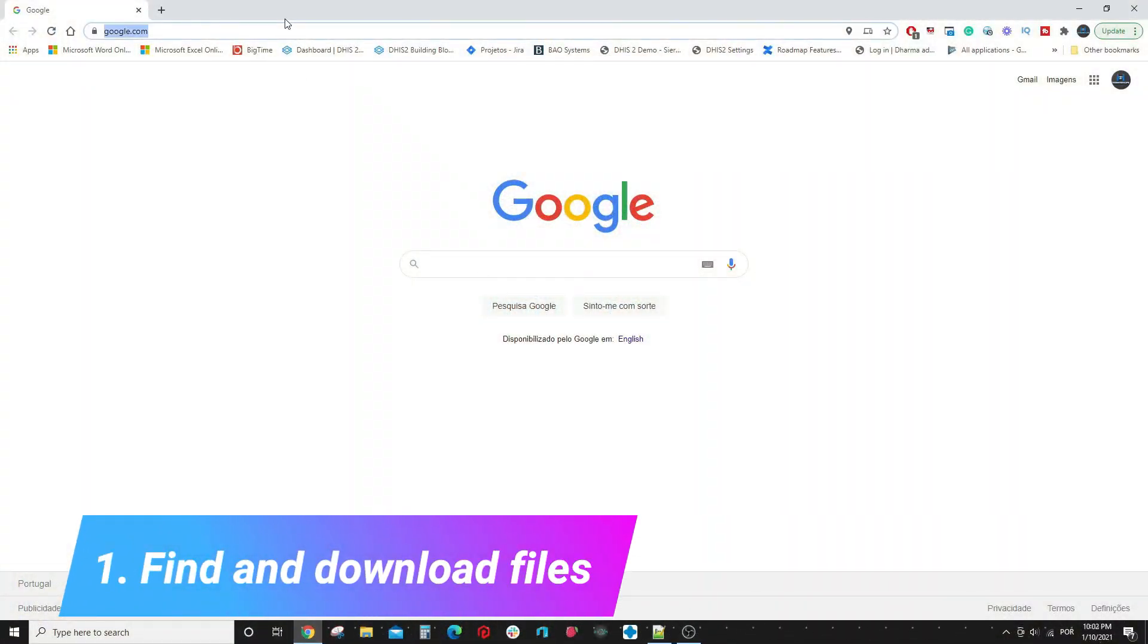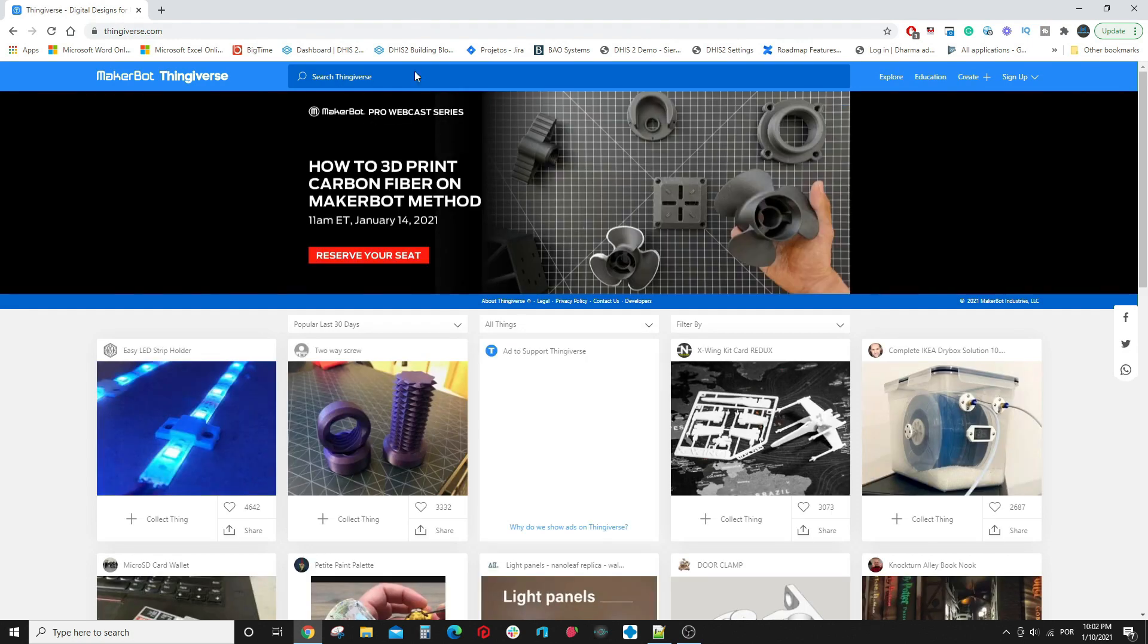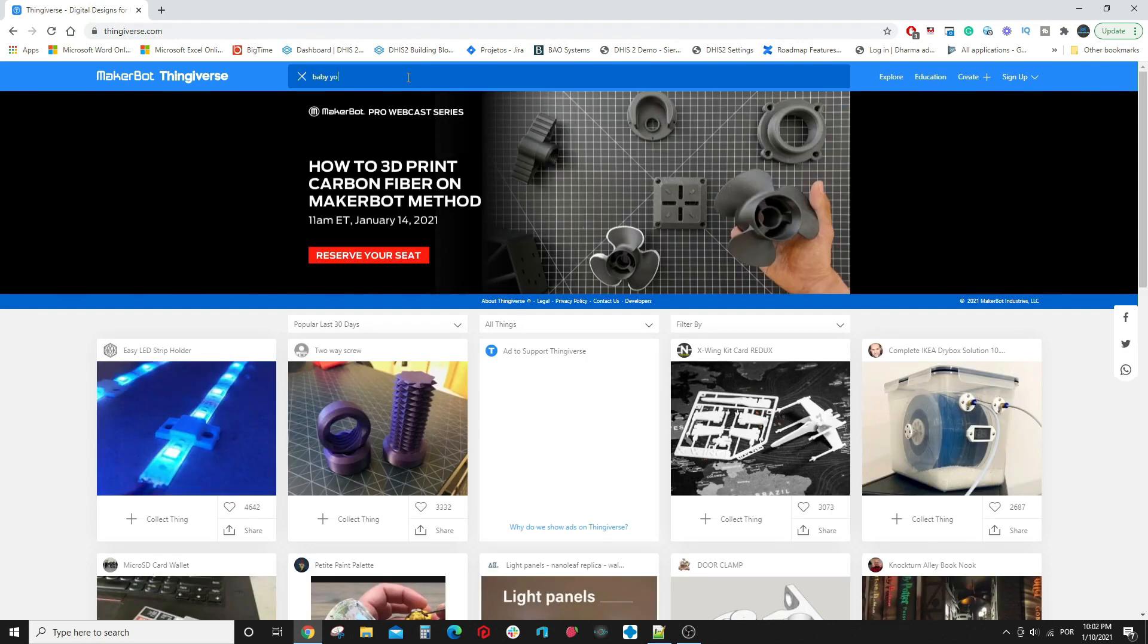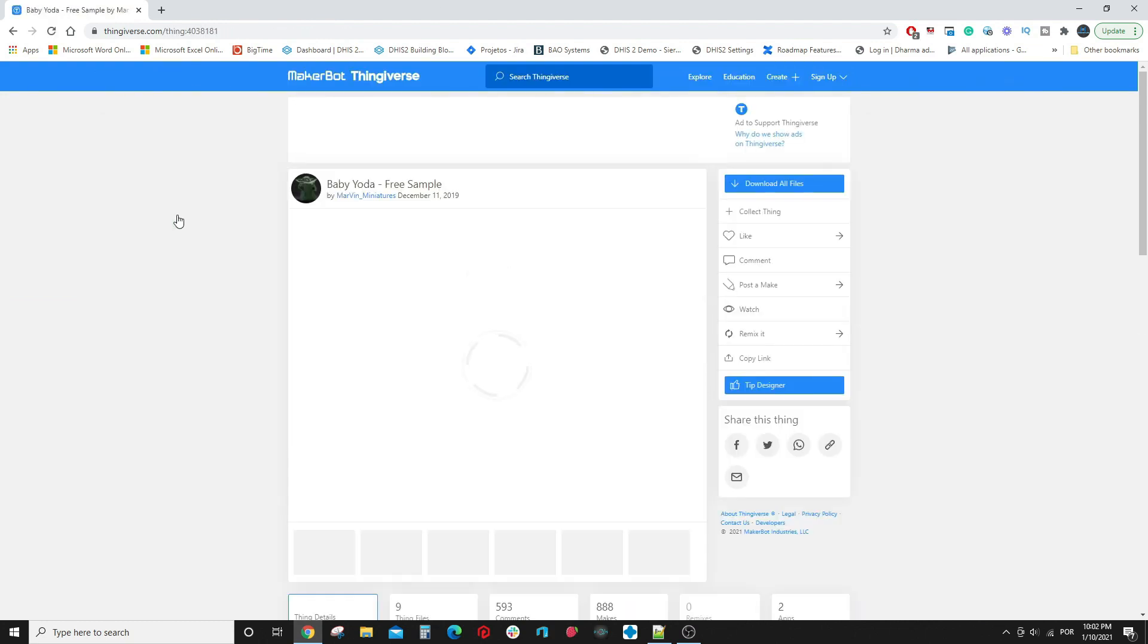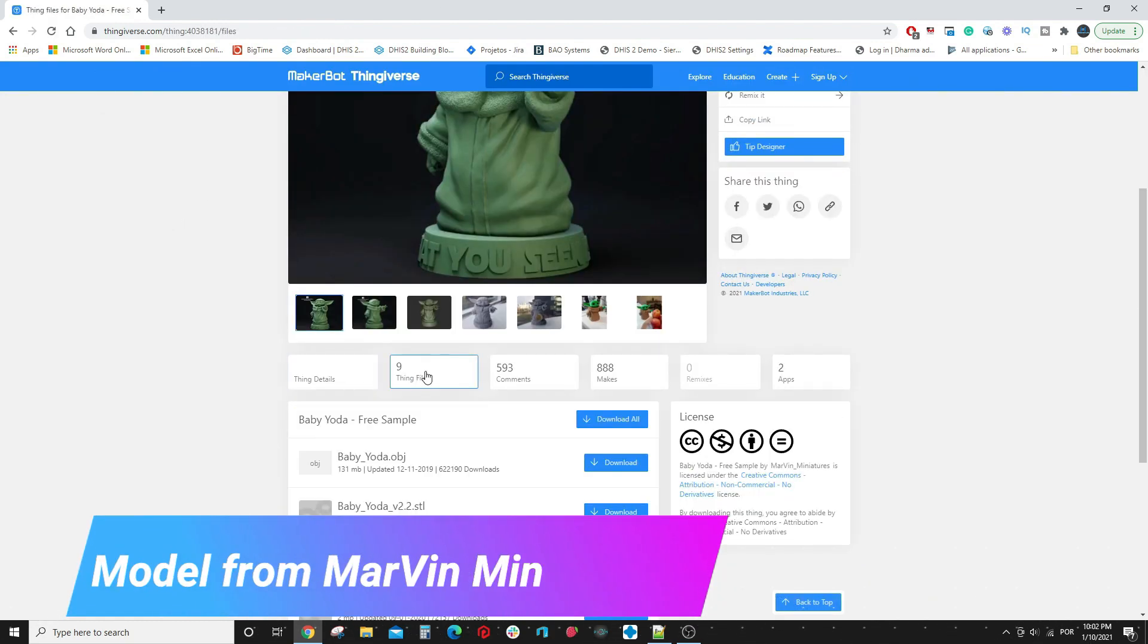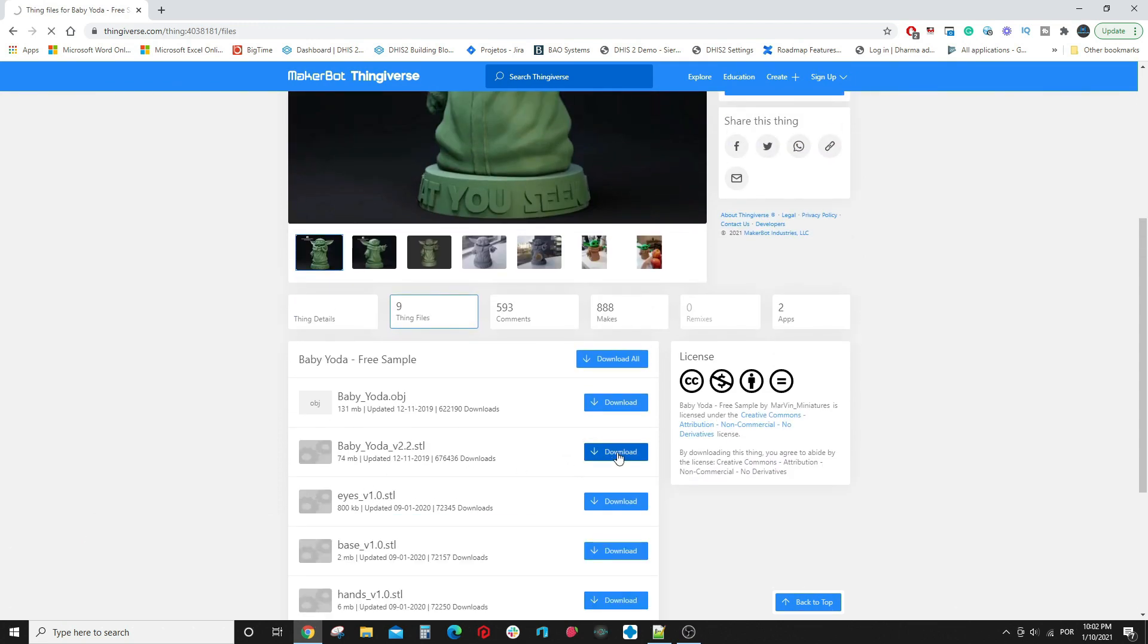First step is to find the file. There are some good sources to find files for print, both free and paid. I will link some sources of models in the description. The most well-known place is Thingiverse, and this particular model is easily found there. So just find the file and download it to your computer.